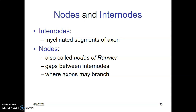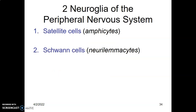The myelinated axon is interrupted at certain areas called the nodes of Ranvier. These are gaps between the internodes where the axons may branch. So the axon is myelinated, but the myelination is interrupted, and the areas with no myelin are called the nodes of Ranvier.